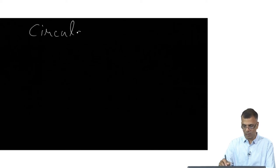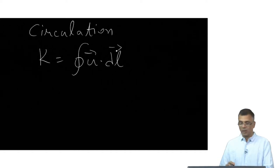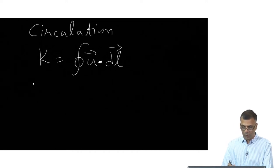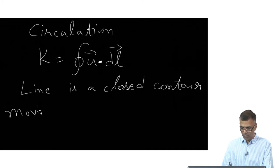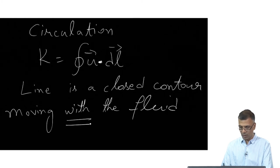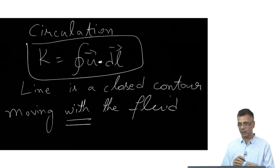As promised, we will talk about this quantity called the circulation, which is defined as u as a velocity field with a dot product. This seems like a line integral — a closed line integral. The line L is a closed contour moving with the fluid. This is important to keep in mind, as if the contour is frozen into the fluid. It is in this particular situation that this definition of circulation is valid.